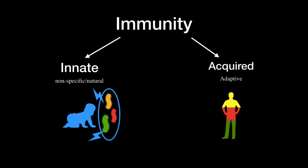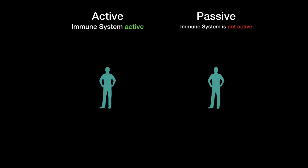Alright so let's see how the acquired immune system works. There are two ways to divide the acquired immunity. You can either have active immunity where your immune system is doing all the work, or passive, which means when your immune system is not really active — and I'll show you why in a second.